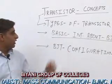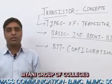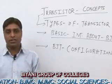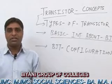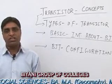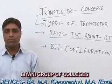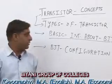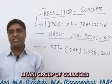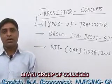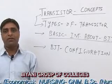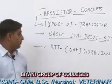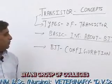BJT is called the Bipolar Junction Transistor because there are two types of charge carriers — electrons and holes — by which electric current flows in the transistor. BJT has various characteristics such as small size, light weight, and very low operating power voltage.